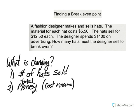We can see that we're selling hats here. It's going to cost us money to make the hats and we're going to get income from selling the hats. So the things that are changing are the number of hats that we sell and the total amount of money — both the total cost and the total income.